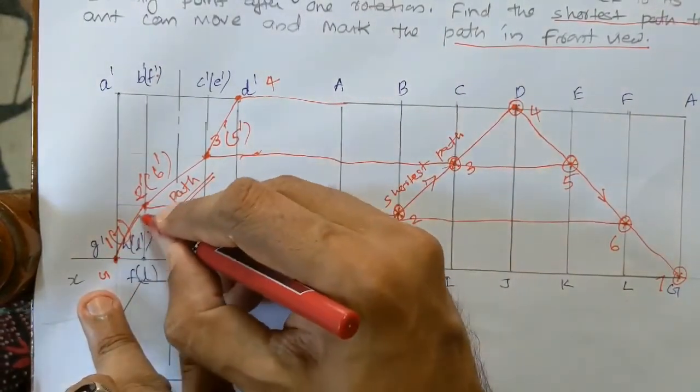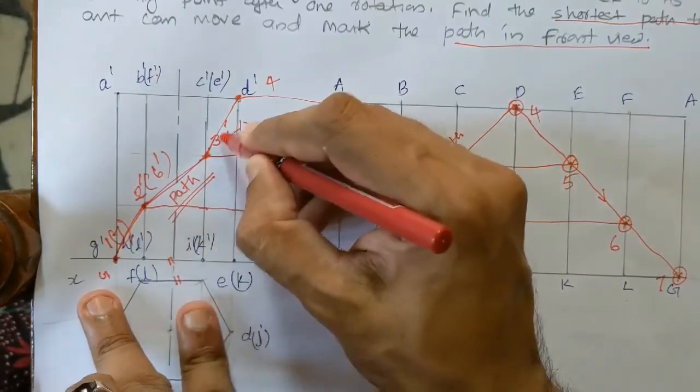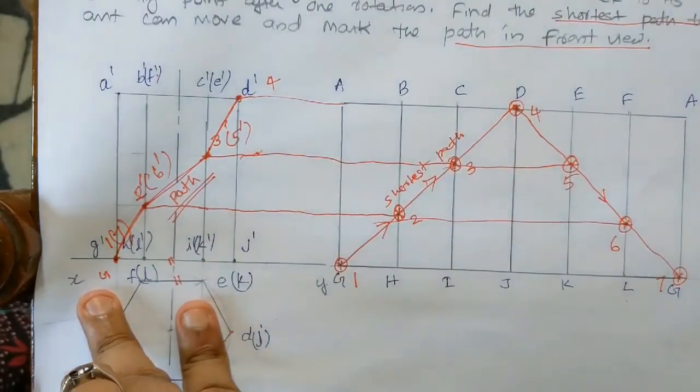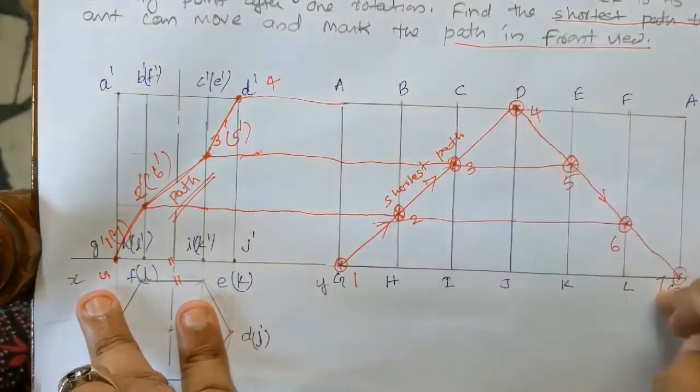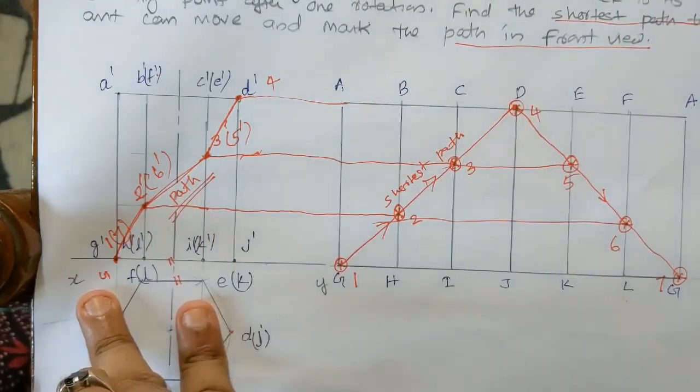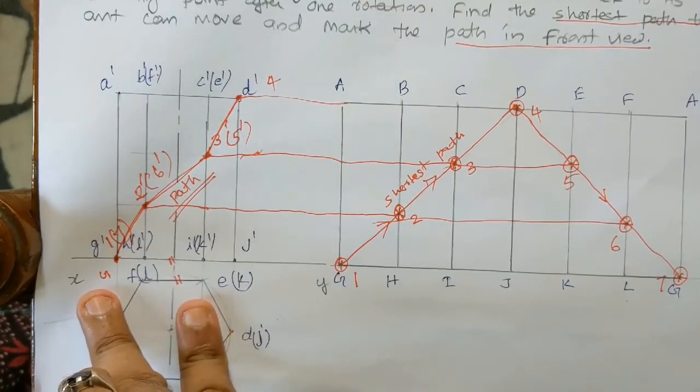Finally, this is the question, this is the shortest path, this is the front view, this is the path. Clear, right?